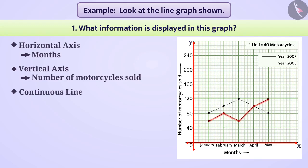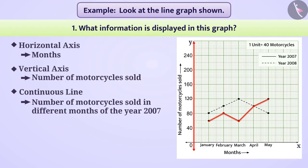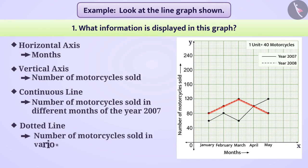In this way, the continuous line shows the number of motorcycles sold in different months of the year 2007 and the dotted line shows the number of motorcycles sold in the various months of the year 2008.